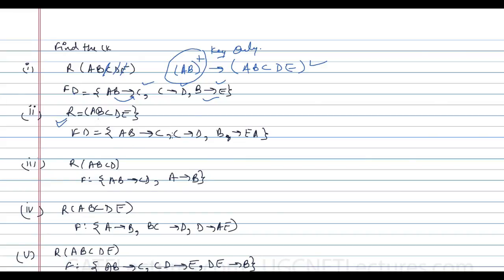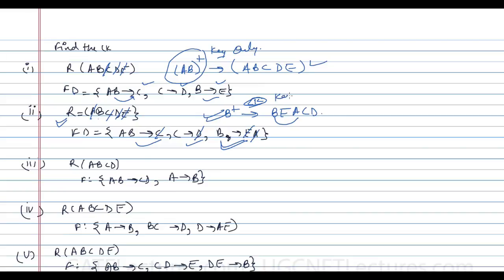For question two, R(A,B,C,D,E): checking the right-hand side, C, D, E, and A are present, so only B is not present. Taking B closure: with B we identify B, then E and A. With AB we identify C, and with C we identify D. Therefore B is the candidate key for this relation.